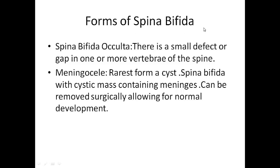There are many forms of spina bifida. The first is called spina bifida occulta, where there is a small defect or gap in one or more vertebrae of the spine. In spina bifida occulta, you may see a dimple or a patch of hair overlying the vertebral defect. Another form is called meningocele — a rare form of cyst where the sac contains only the meninges, and it can be surgically removed to allow normal development.